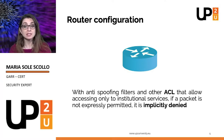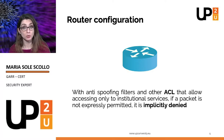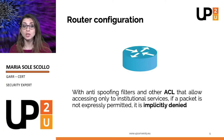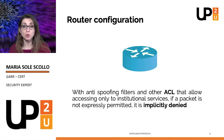Implicit deny is a network security concept where anything not explicitly permitted or allowed should be denied. Instead of requiring you to block all traffic you don't want, you can just create rules for traffic that you need to go through. This is a much more secure configuration.